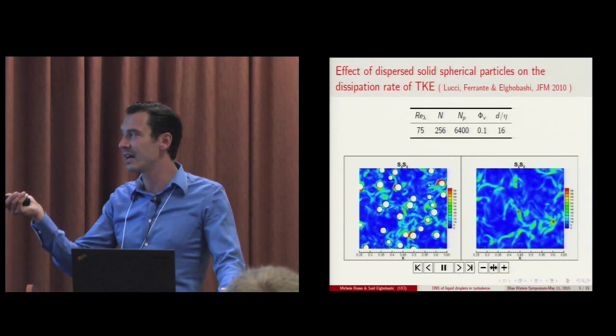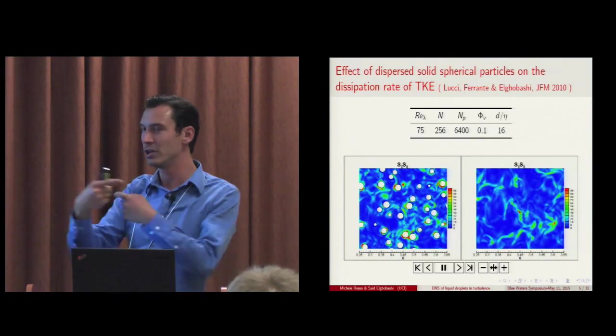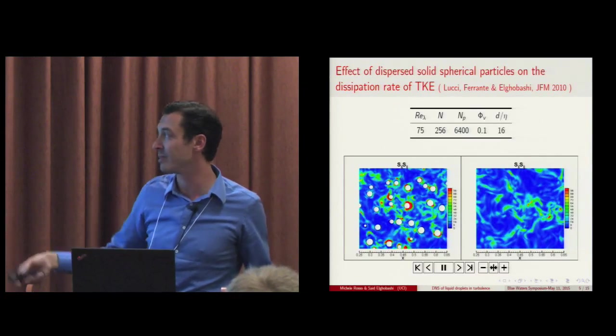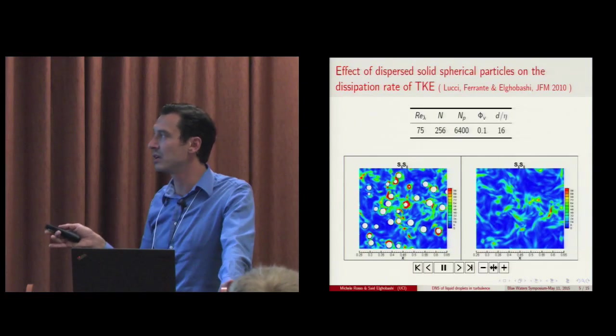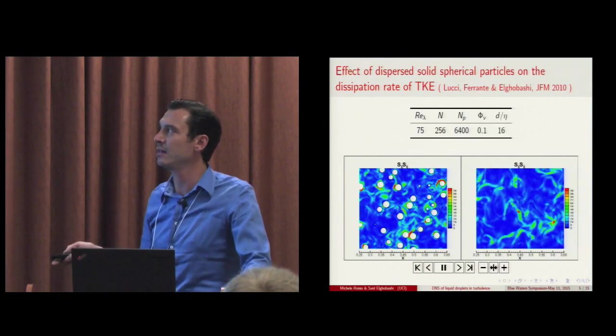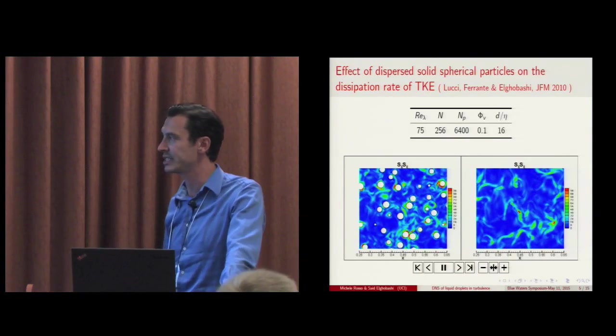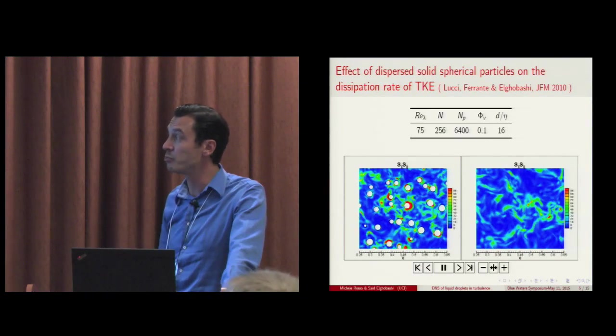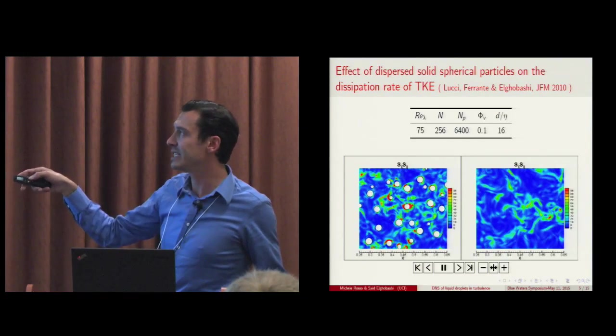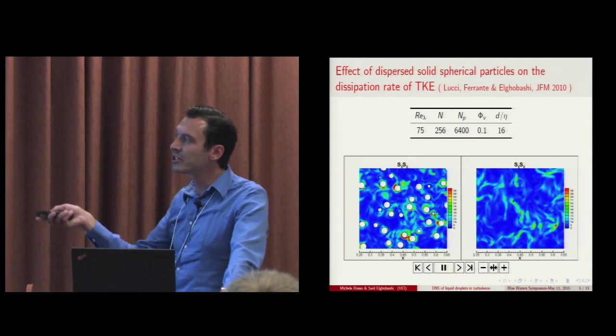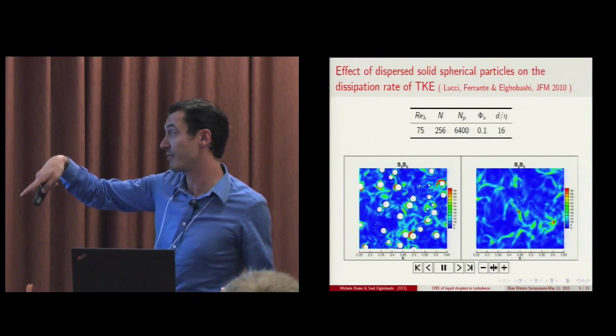These droplets, despite the fact that it doesn't seem so, they have the same size. Simply the slice cuts it so they go and they pass through the plane of the slice. But they all have the same size and they are all with a diameter comparable with the Taylor length scale and pretty much 16 times the Kolmogorov scale which is the smallest scale of turbulence. So as you can see, Lucci, Ferrante, and El Gobashi proved that the presence of dispersed solid spherical particles increases the dissipation rate of turbulent kinetic energy, particularly in the front of the particle itself.